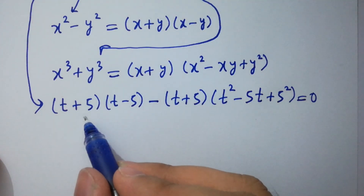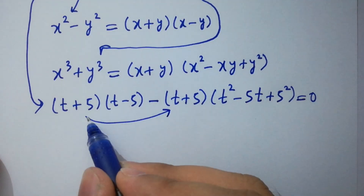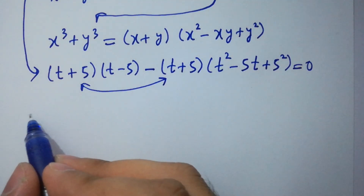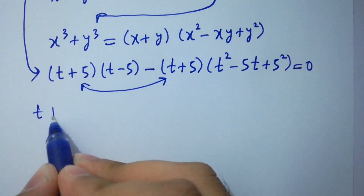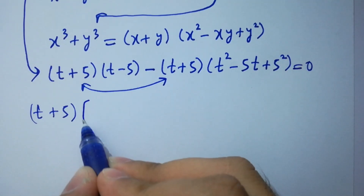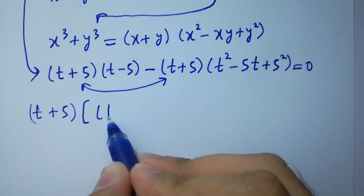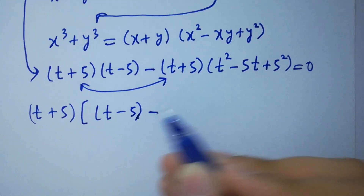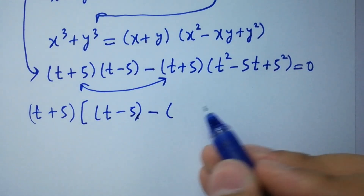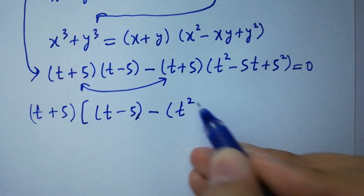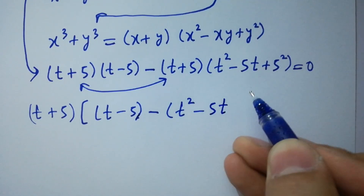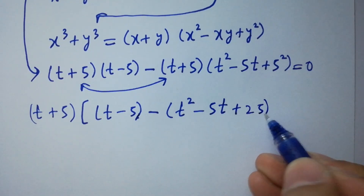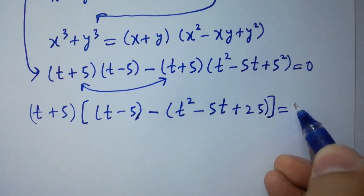Here (t plus 5) is common in both terms. Factoring out (t plus 5), we have (t plus 5) times the quantity: (t minus 5) minus t squared minus 5t plus 25, equal to 0.